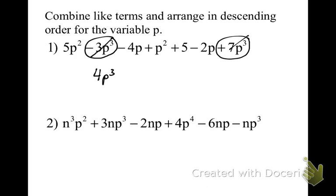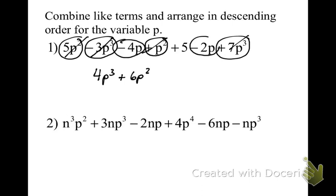Now I'll go to the 2nd power. We've got positive p squared and 5p squared — that makes plus 6p squared. Now I'm left with negative 4p and negative 2p, that makes negative 6p. And the last term is our constant term with no variable, because that would be p to the 0 power times 1. And there we go.